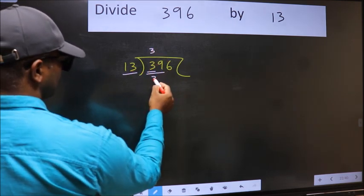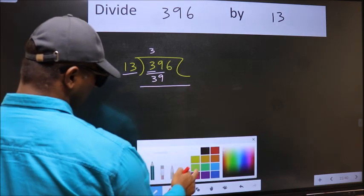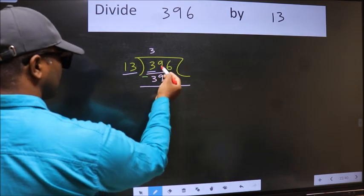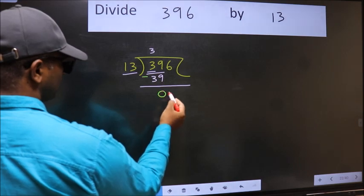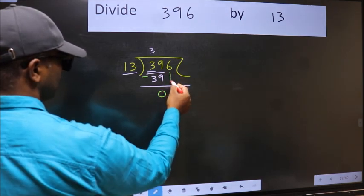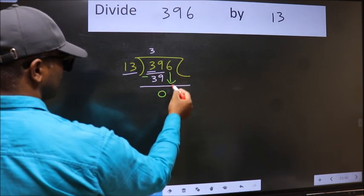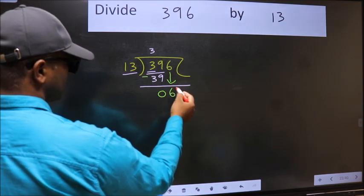13 times 3 is 39. Now we should subtract. 39 minus 39 is 0. After this, you bring down the beside number. So, 6 down. After this step, the mistake happens.